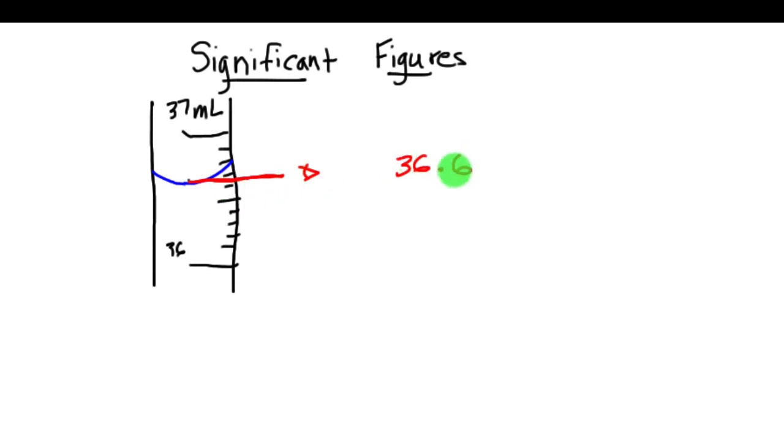I don't want to put a seven here. I know we definitely have to keep it as a six. So the question is, what is the next number? Well, it kind of looks like it's a little bit closer to the six, so I'm going to say four. So I'm going to say 36.64 milliliters.